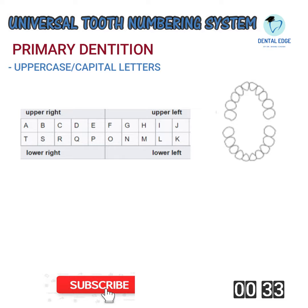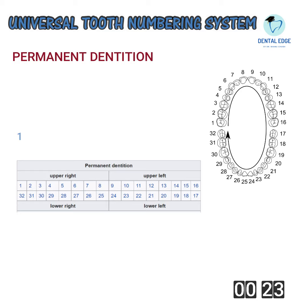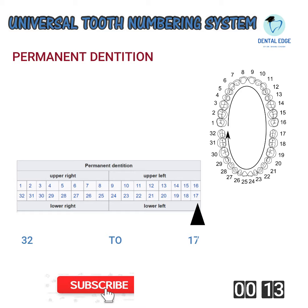For permanent dentition, the maxillary teeth are numbered from 1 through 16, beginning with the right third molar. The mandibular teeth are numbered from 17 through 32, beginning with the mandibular left third molar.